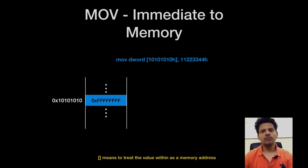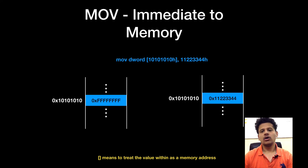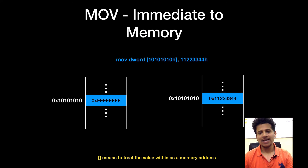The last form is MOV immediate to memory — that means moving an immediate value to a given memory address. After the execution of this instruction, the immediate value 11223344 will be copied to memory address 10101010. Remember: we cannot move a value from one memory location to another memory location directly.